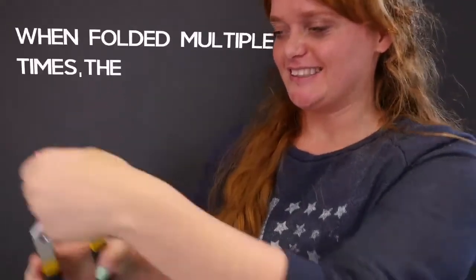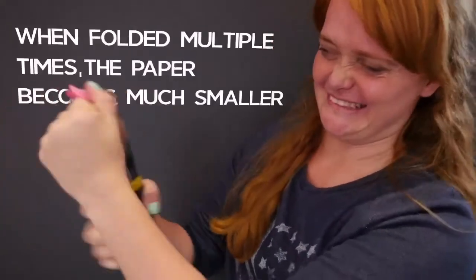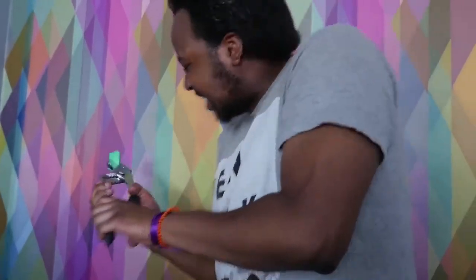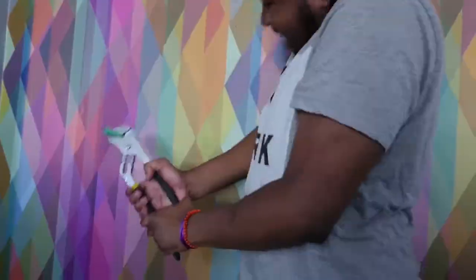When folded multiple times, the paper becomes much smaller, especially compared to its increasing thickness. The paper also gets distorted as its creases become more rounded with each fold. Eventually, the paper fibers themselves aren't flexible enough to allow further folds.